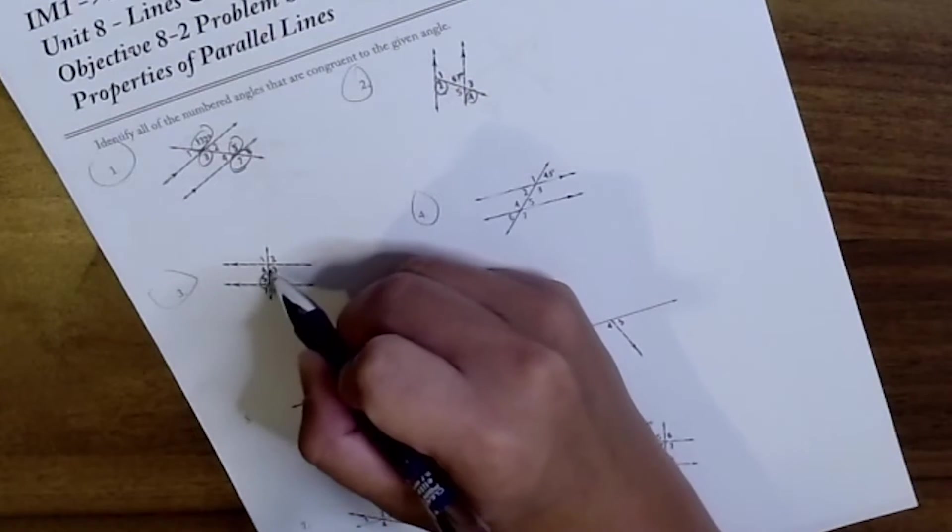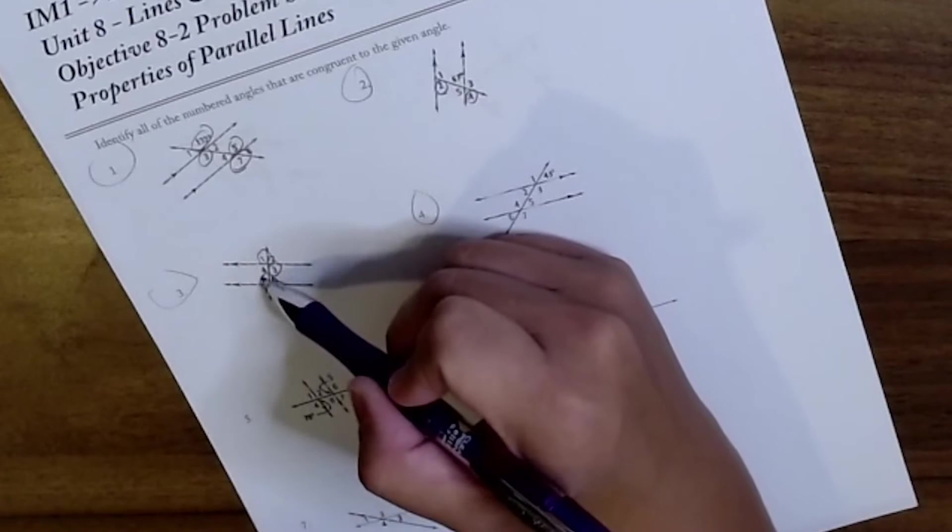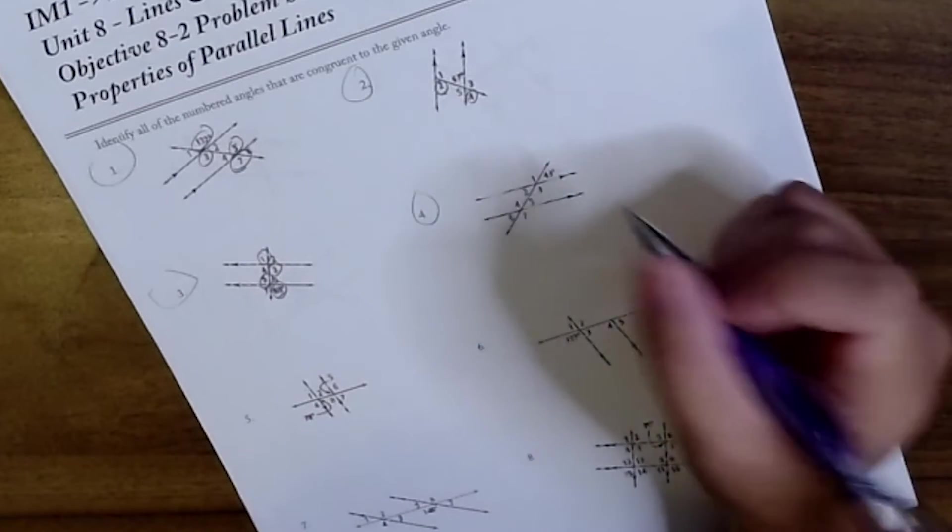Here, 88, so 5, 3, and 1. 5 because of vertical, 3 because of alternate interior, and 1 because of vertical.